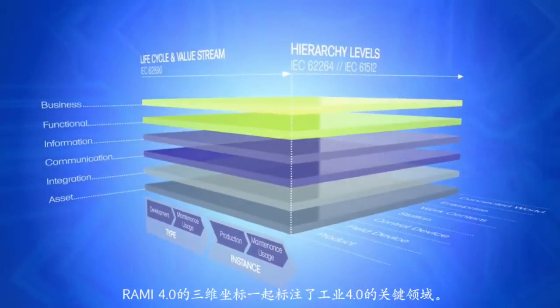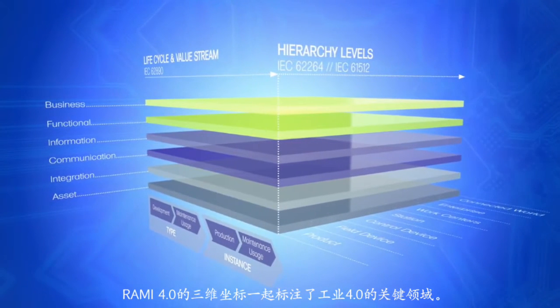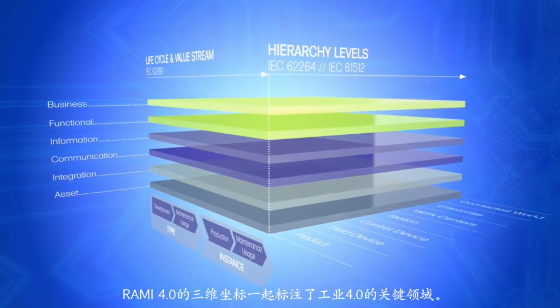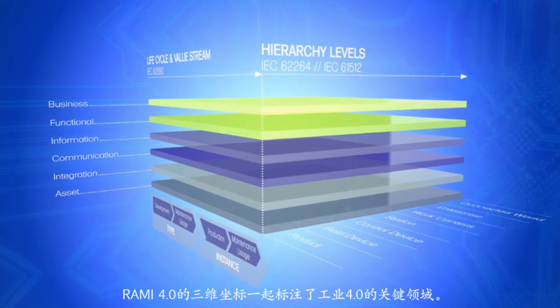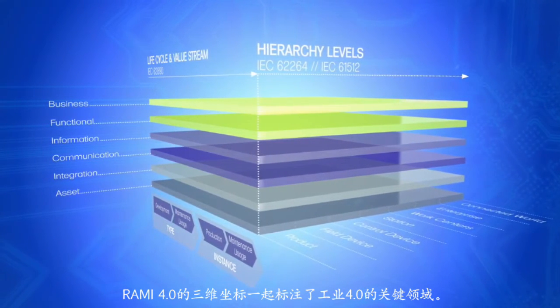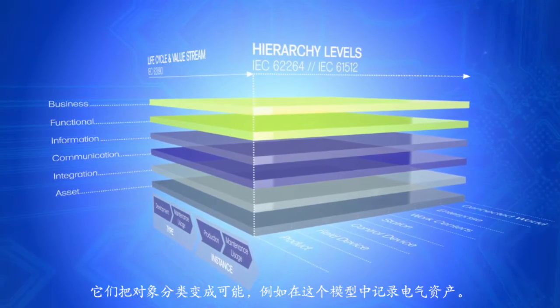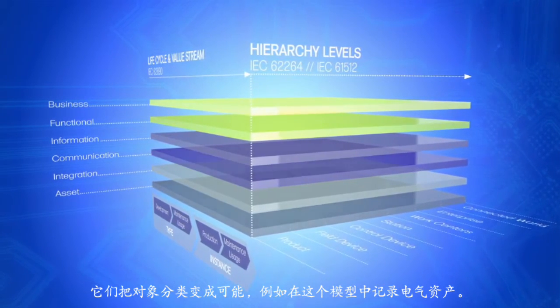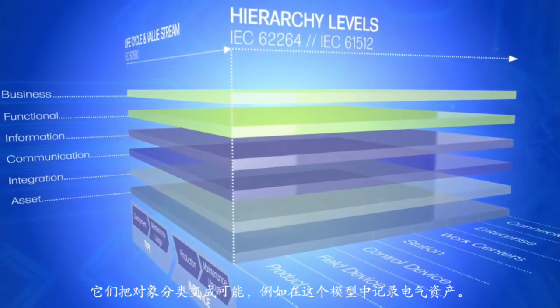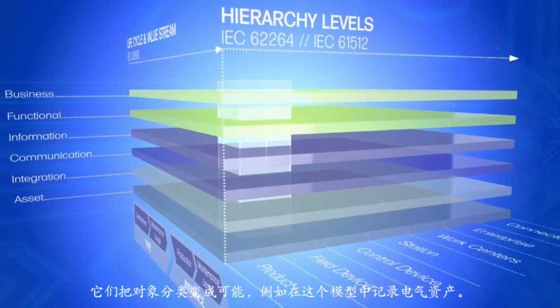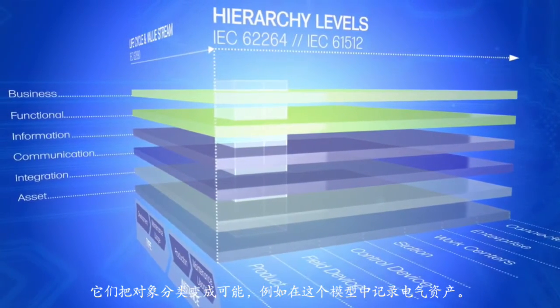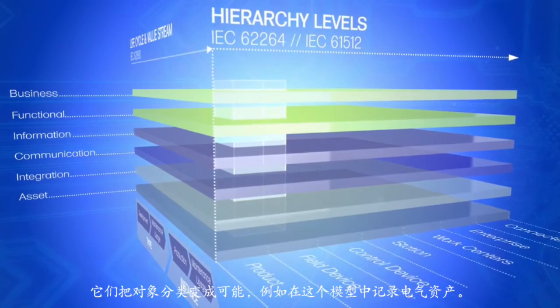Together, all three dimensions of RAMI 4.0 map the key aspects of Industrie 4.0. They make it possible to classify an object, such as an electric axis, accurately in the model.